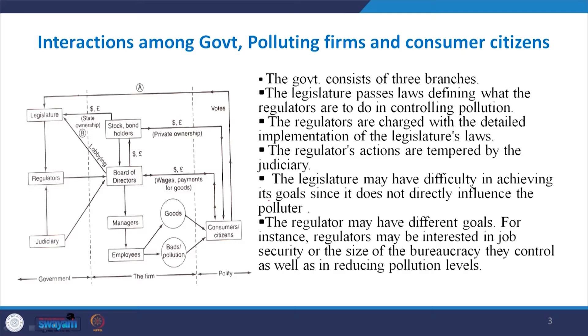We have environmentalists who always put pressure that the environment should be protected, and there should be strong environmental regulations. But at the same time, the producers feel that if environmental regulations are very strong, then their economic interest may be badly affected. Similarly, there are consumers who are affected due to the negligence of the producers while producing goods and releasing pollution into the atmosphere. We have different kinds of stakeholders, and how they interact with each other and lobby with the government is examined under the political economy model of regulation.